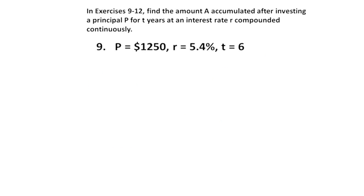Next problem. In exercises 9 through 12, find the amount A accumulated after investing principal P for T years and interest rate R compounded continuously. That's a different formula, and that has to do with the compounding continuously formula. Really, this was initially brought up by, I think it was Jacob Bernoulli who discovered this. That formula is going to be A equals our principal times E to the power of Rt.